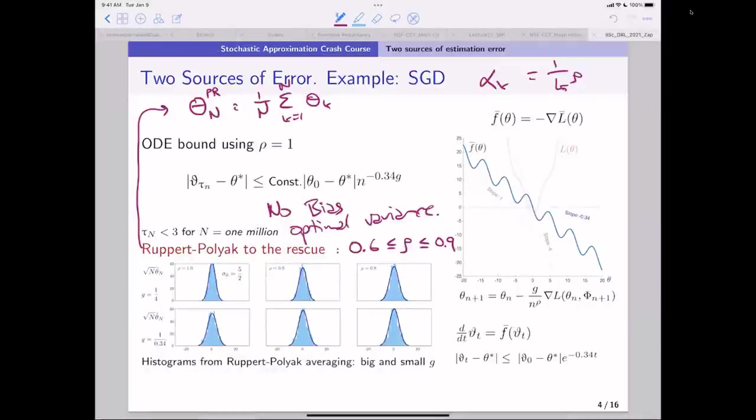And whether it's rho equals 0.8 or rho equals 0.9, and whether you take G equals 1/4 or G equals 3/4, it doesn't matter that much. You get optimal variance. Optimal bias, no bias, optimal variance. So problem solved, right?